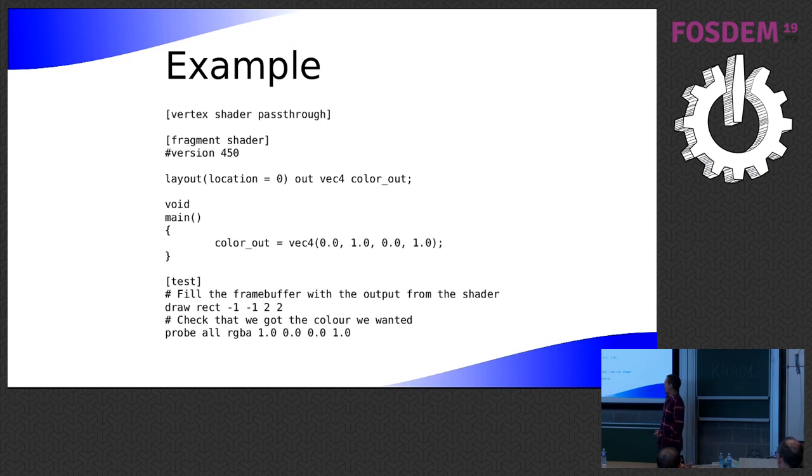That's just a shortcut to make a minimal vertex shader which just copies one attribute over to position. And then I've made a little fragment shader which just outputs green. And then in the last section is the test section.